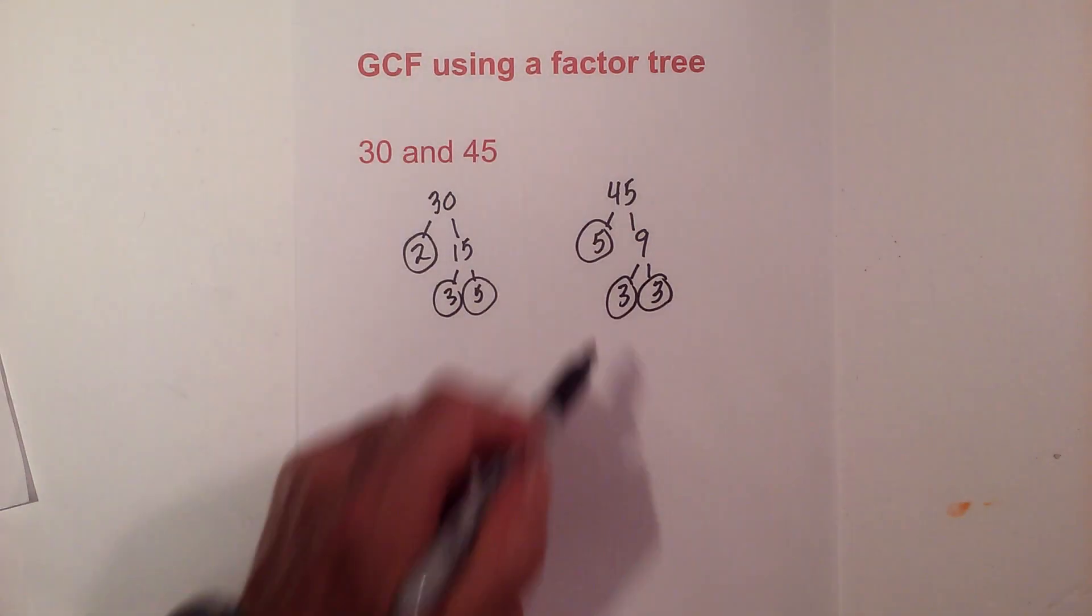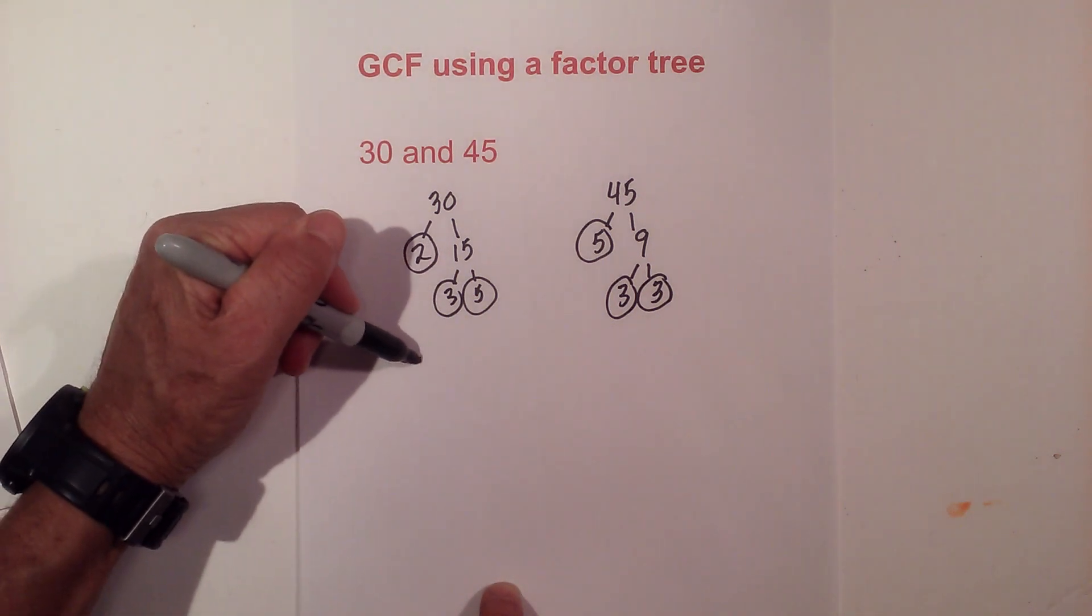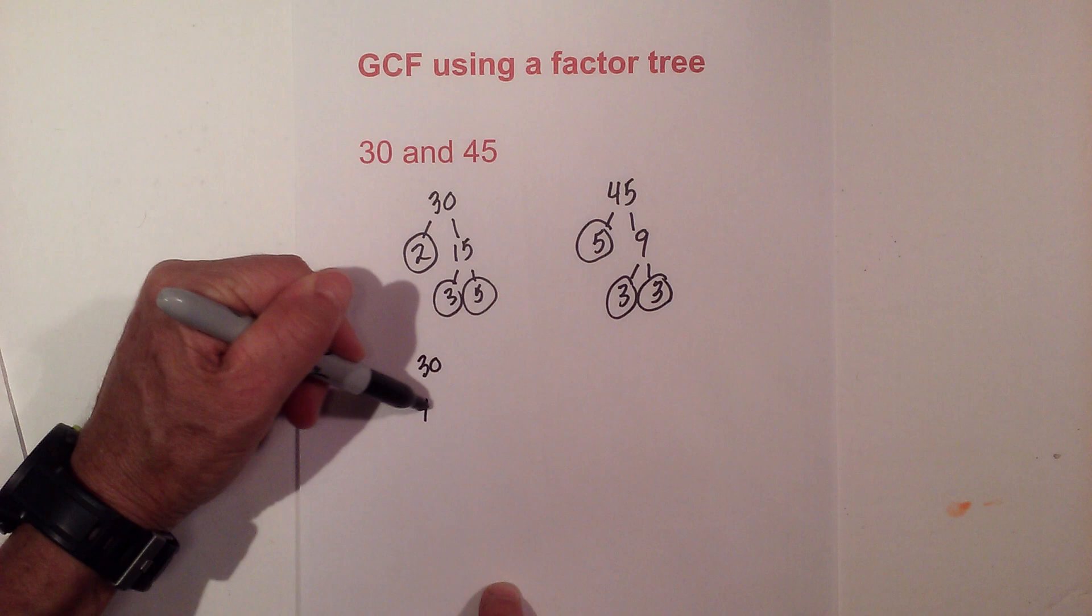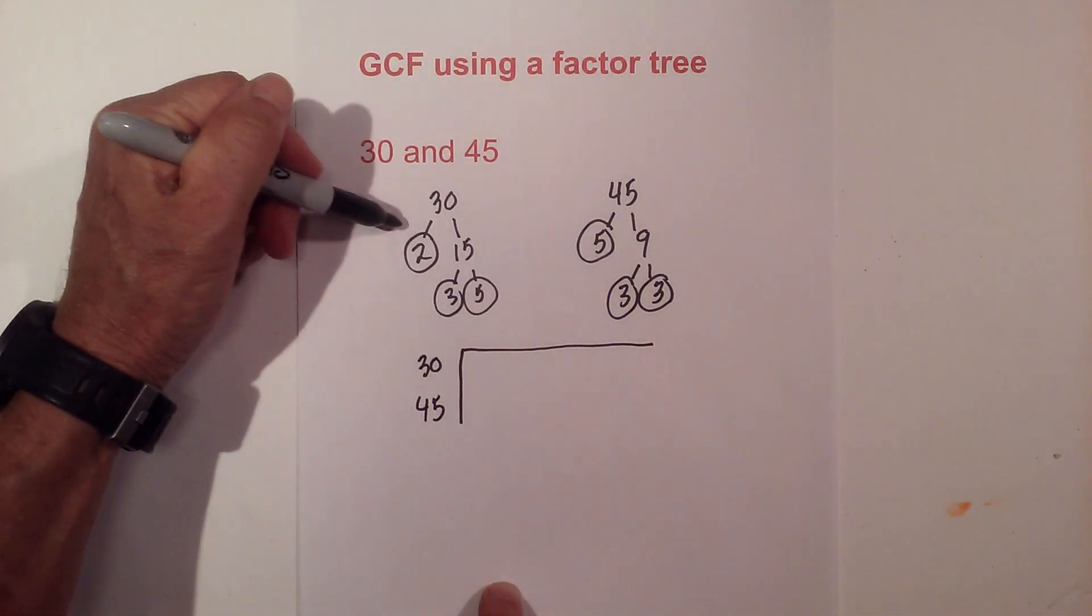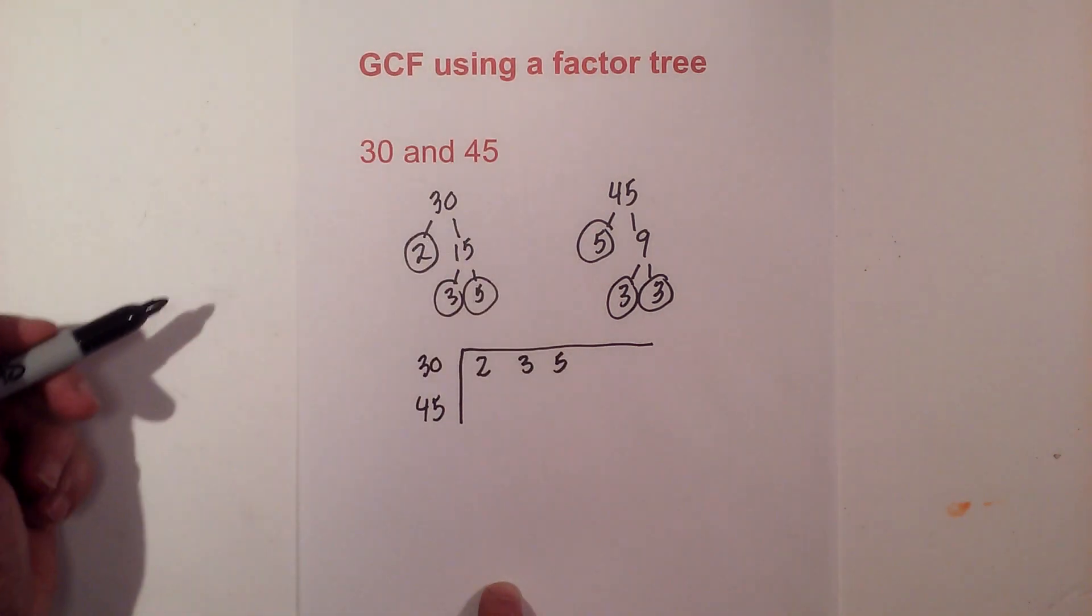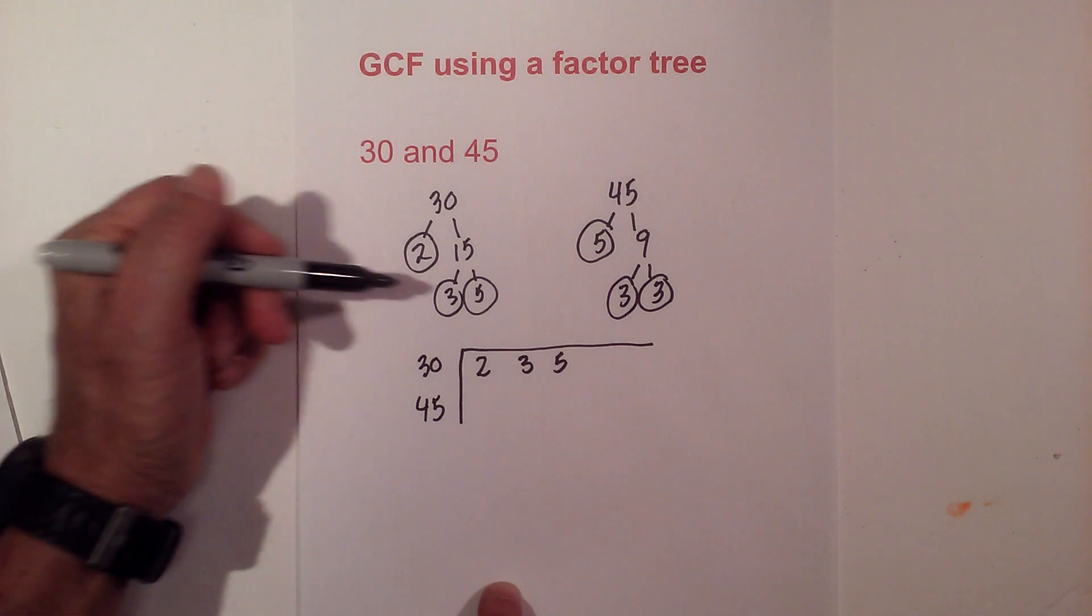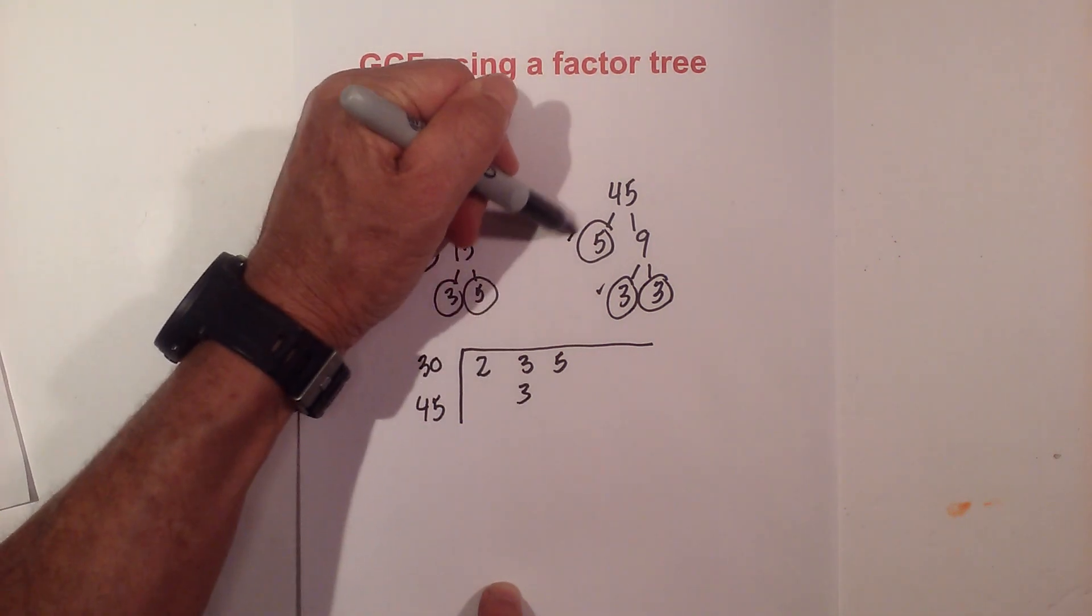Next I complete a factor chart. This will really cut down on the number of mistakes. So I'll write out the prime numbers for each of these: 2, 3, and 5. And now for 45, I'm gonna put a check by them. There's a 3, there's a 5, and then I have a leftover 3 and I'll just write it there.